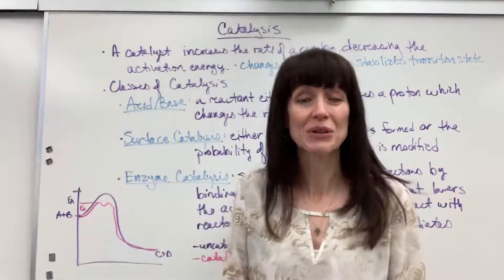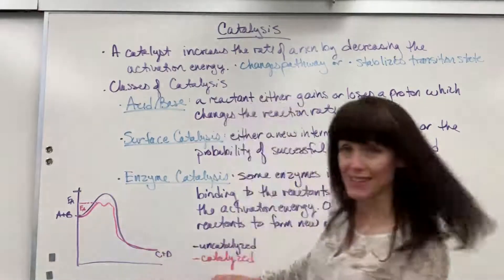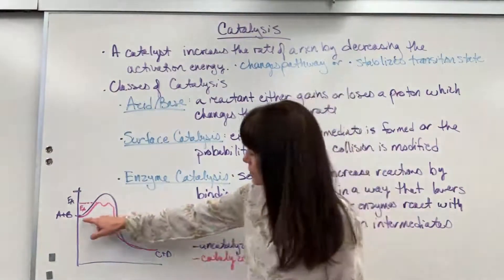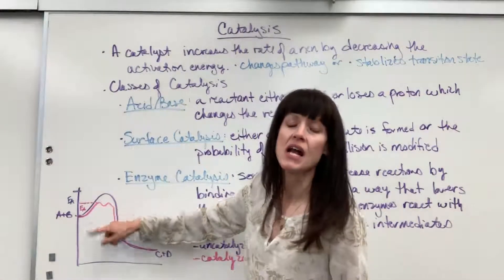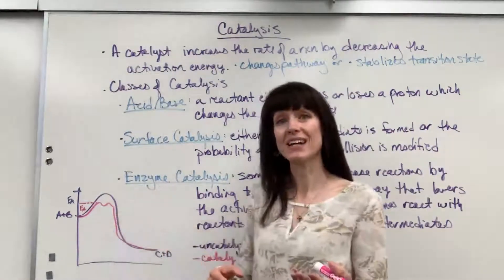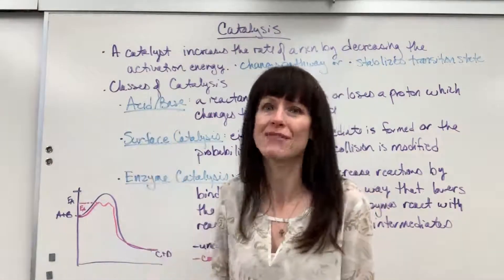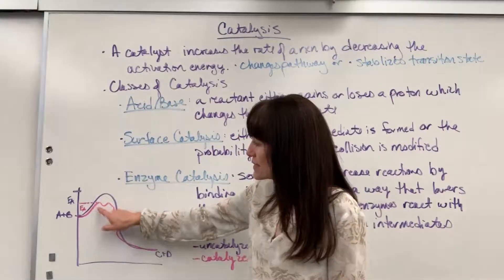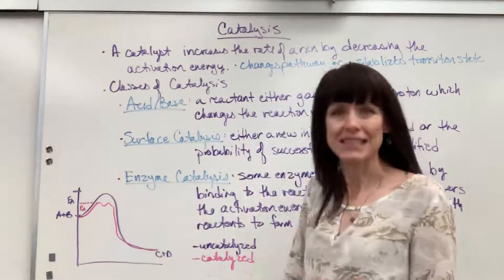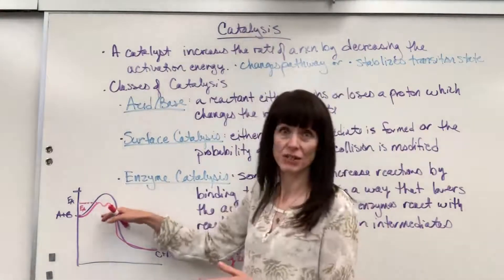Now we're going to add a catalyst and look at what happens. This activation energy — my pink color here — that's the catalyzed reaction. So the activation energy is lower. Often when you look in books showing the catalyzed activation energy, they'll show these humps — they look like camel humps, sometimes even five little waves. What that is indicating is actually these two things: our idea of how catalysts lower that activation energy.